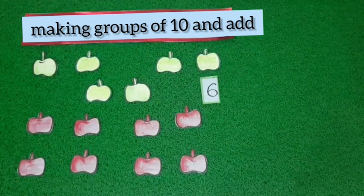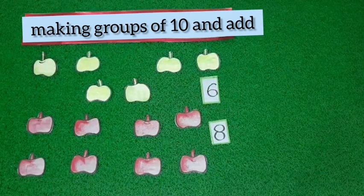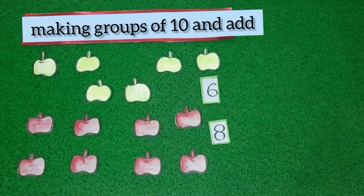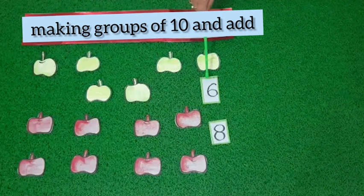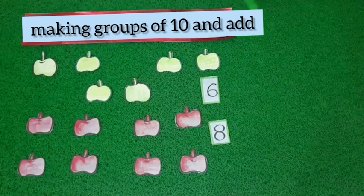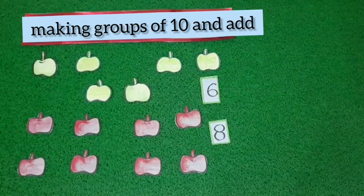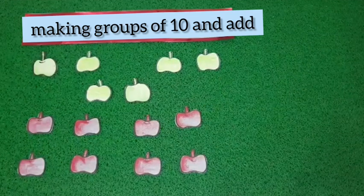Here we have some green and some red apples. Green apples are six in number. Now again we will make a group of ten apples. Kids, tell me: how many green apples are there? Yes, six apples are there — and how many more apples do I need to make a group of ten?